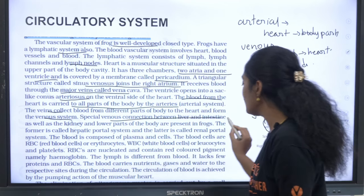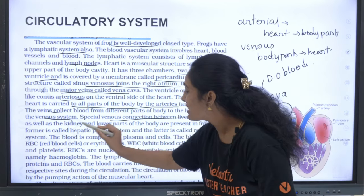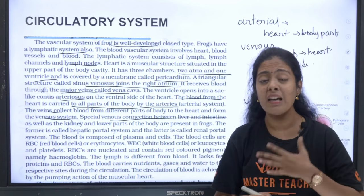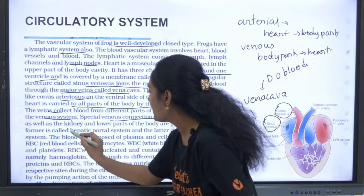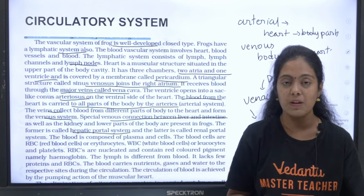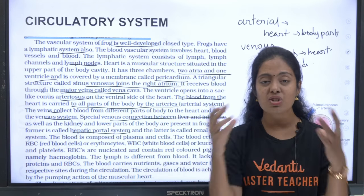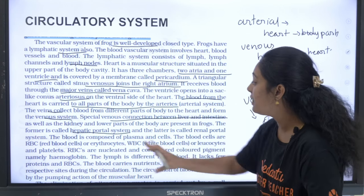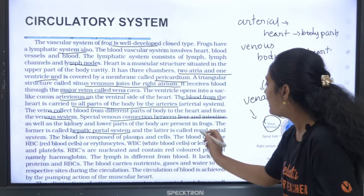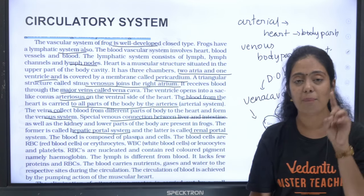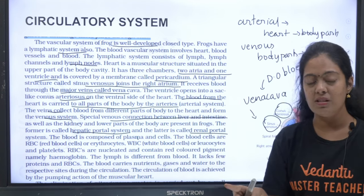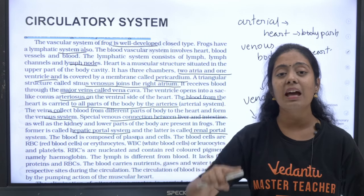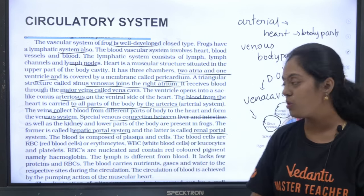There is a special venous connection between the liver and intestine as well as the kidney and the lower parts of the body — the hepatic portal system and the renal portal system. The hepatic portal system carries blood to the intestine and liver; the renal portal system carries blood to the kidneys.